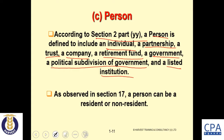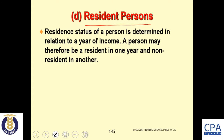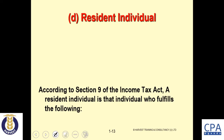As observed in Section 17, a person can be either resident or non-resident. Resident status is determined in relation to the year of income — a person may be resident in one year and non-resident the following year. Resident status can be categorized according to the nature of the person for tax purposes, as the following slides show. According to Section 9 of the Income Tax Act, a resident individual fulfills the following conditions.